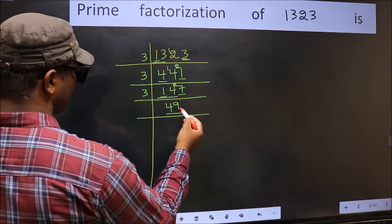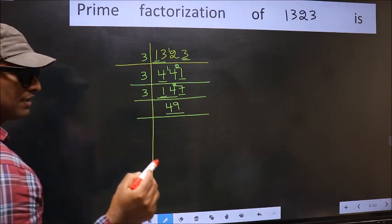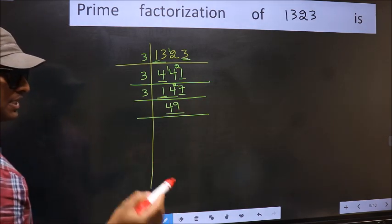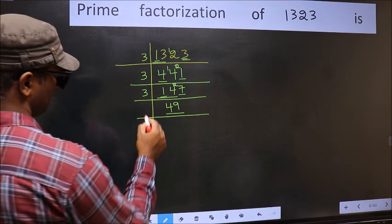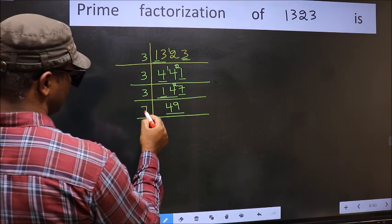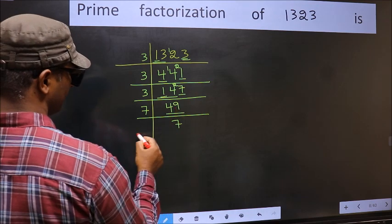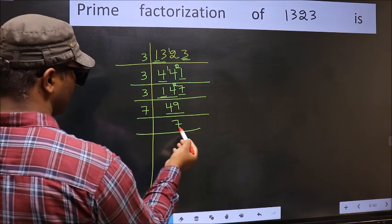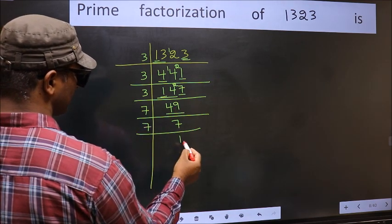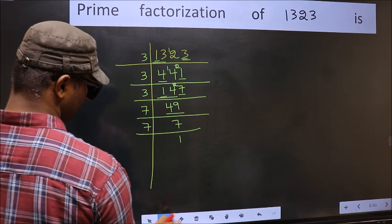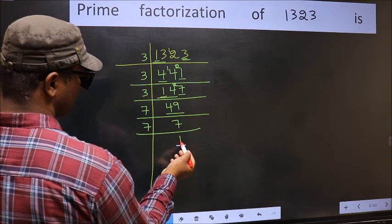Now here we have 49. Always remember 7 times 7 is 49. Now we have 7. 7 is a prime number, so 7×1=7, and we get 1 here.